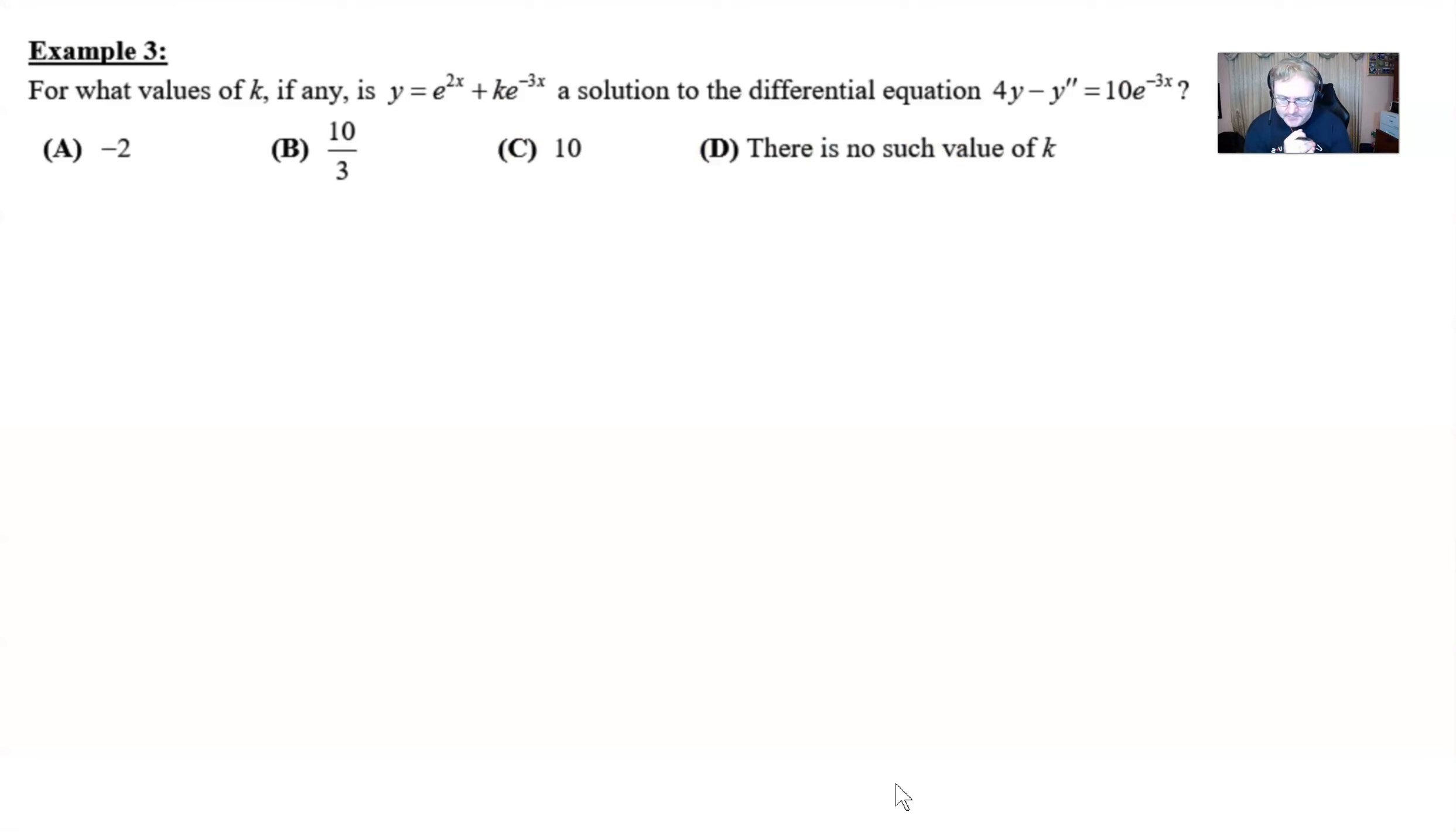So let's read through this together. For what values of k, if any, is the function y equals e to the 2x plus k times e to the negative 3x a solution to the differential equation given: 4y minus y double prime equaling 10 e to the negative 3x.